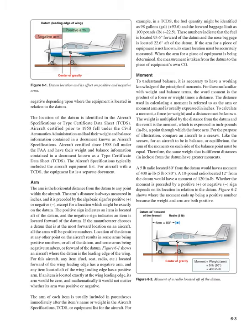For illustration, compare an aircraft to a seesaw. For an aircraft to be in balance (equilibrium), the sum of the moments on each side of the balance point must be equal. A 5-pound radio located 80 inches from the datum would have a moment of 400 in·lb (5 × 80). A 10-pound radio located 12 inches from the datum would have a moment of 120 in·lb. Whether the moment is positive or negative depends on its location in relation to the datum.